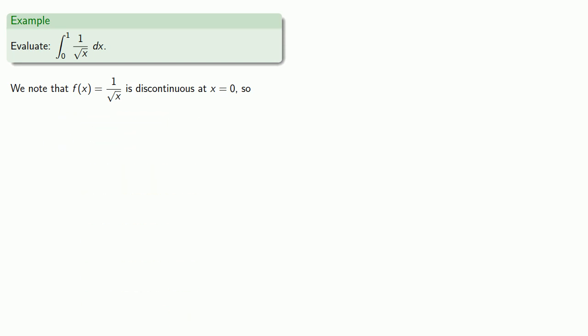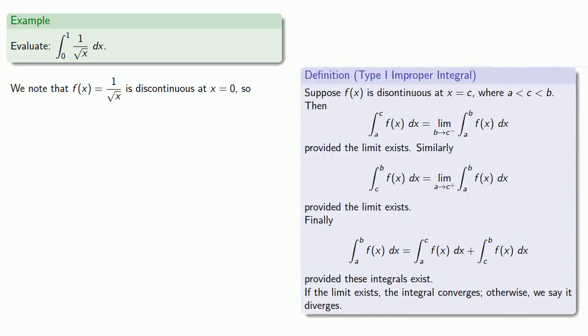We have a type 1 improper integral. Since our lower limit is the point of discontinuity, we'll limit around that. We'll take our limit as the lower bound goes to 0 from above. We'll find our antiderivative and evaluate it.